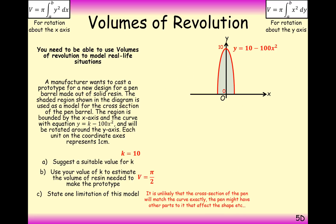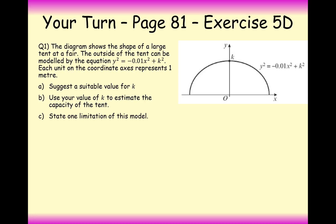State one limitation of this model where anything that links it back to most importantly this context of the question here. So it's unlikely that the cross section of the pen will match the curve exactly. The pen might have other parts to it that affect the shape. You'll need some space for the ink to fill in. So where does the ink go would be a very good question. So any comments that links it back to the context of the question here is what they are looking for. And generally this question, this point here where it's unlikely that the cross section of the pen will match the curve exactly. That's a very standard answer to these sorts of problems here. So generally the shape of the object is not going to match the equation of the curve exactly. So it's difficult to say that this is an exact model.